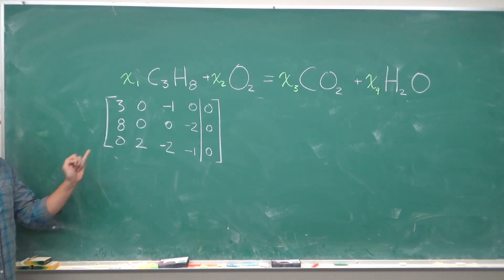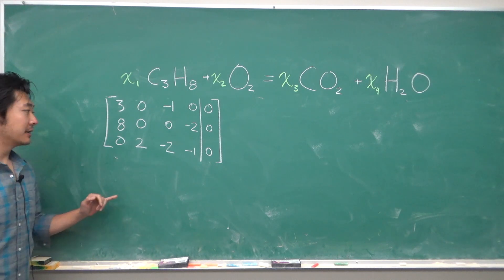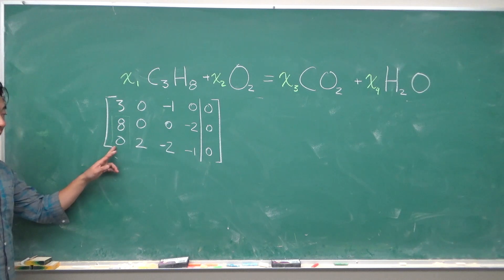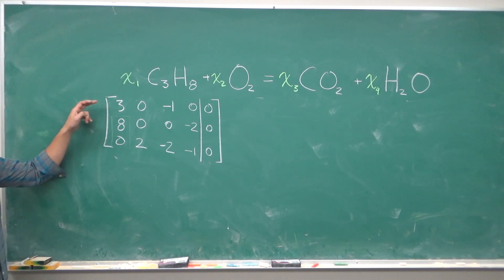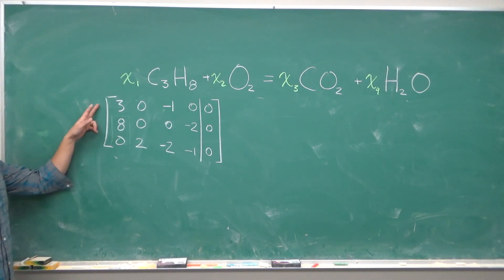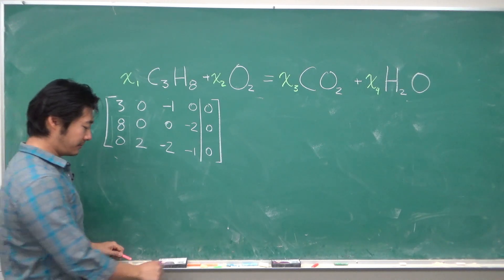Now we want to row-reduce this matrix. So what we want to do is make these entries 0. Since this is already 0, there's nothing to do here. So what we can do is multiply the first row by negative 8 thirds and add it into here. When we do this, we get this matrix.